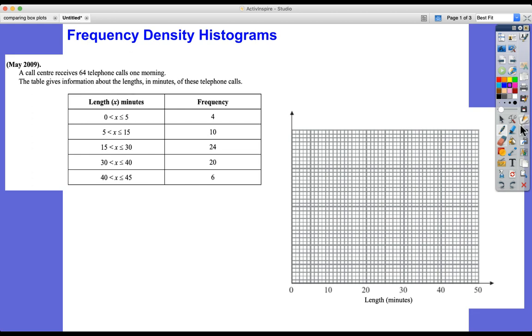Hi and welcome to a quick lesson on frequency density histograms. This is a really important topic at IGCSE and GCSE level and it can get you lots of marks if you know what you're doing. This question is all centered around a call center. It receives 64 telephone calls one morning and the table gives information about the lengths in minutes of these telephone calls.